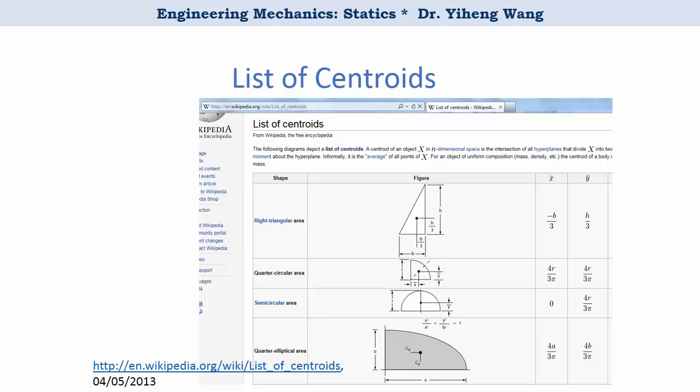So let me remind you that the centroid of common simple regular geometric shapes are widely summarized and can be easily found either online or in your engineering textbook or handbooks. We will need to use this known information to find out the centroid of composite areas.